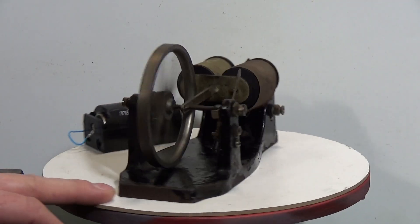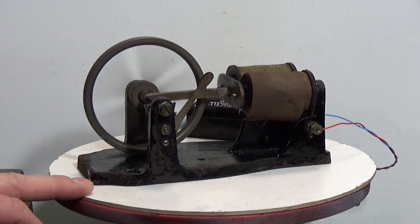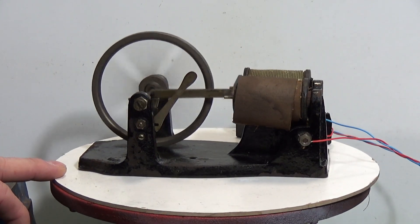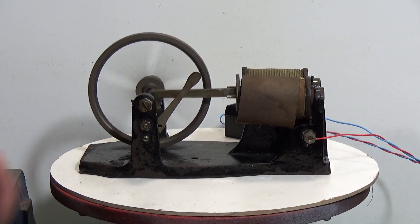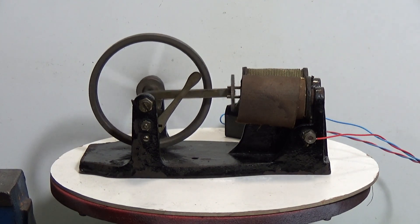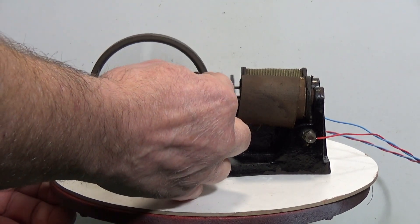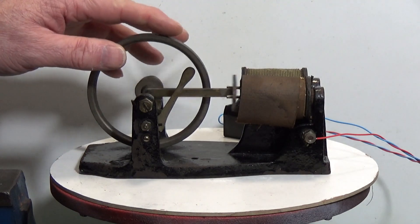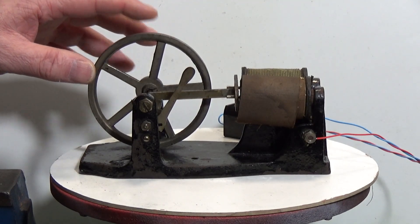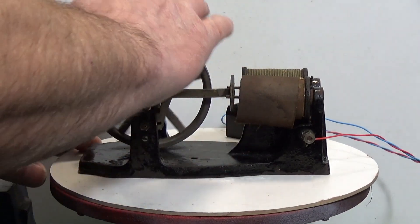As I say unfortunately the flywheel got bent in the trip across the pond, but it's not stopping it from running. So that's going as we're looking at it anti-clockwise. If I take that off and we'll slow it down, there we go. We push the lever the other way, it should run the other way.